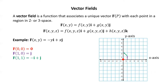Let's look at some more. F of (1,1): when we plug 1 in for X and 1 in for Y we get negative i plus j. In the XY plane, to draw that vector negative i plus j, I start at the point (1,1) and go left 1 and up 1 to get to the point (0,2). F of (1,2): plugging in 1 for X and 2 for Y we get negative 2i plus j. Starting at the point (1,2), I move left 2 units and up 1 unit to sketch that vector.